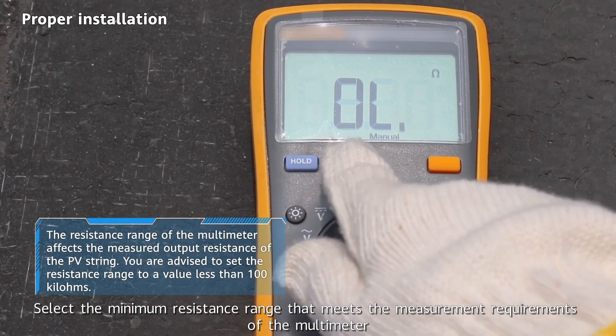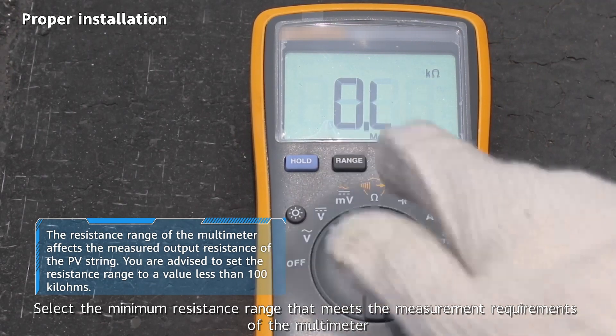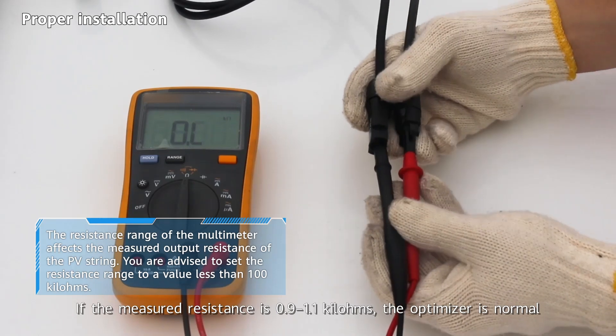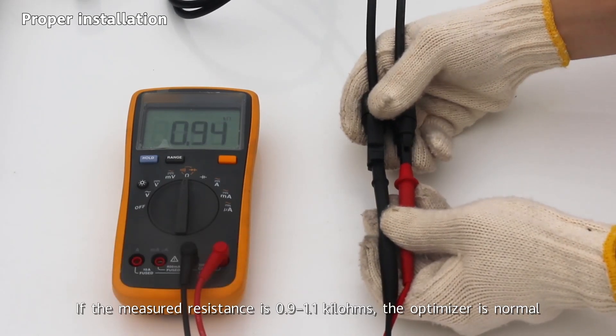Select the minimum resistance range that meets the measurement requirements of the multimeter. If the measured resistance is 0.9 to 1.1 kilohms, the optimizer is normal.